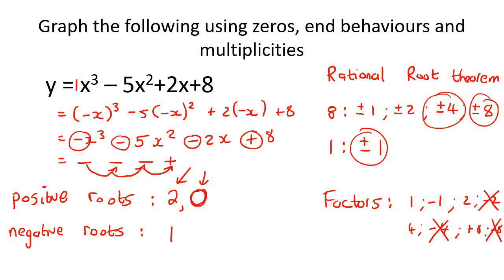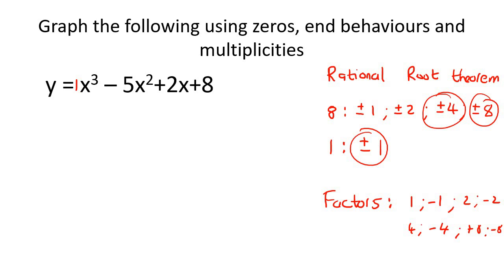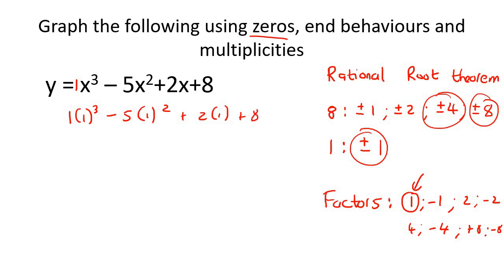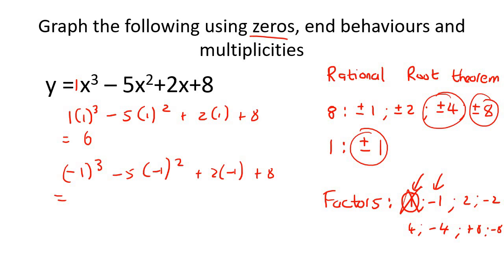We're going to plug these numbers into the expression until we get zero. Starting with x = 1: calculating gives 6, so that doesn't work. Next we try x = -1: calculating gives zero. So one of our zeros is x = -1. We don't need to keep trying all possibilities now.